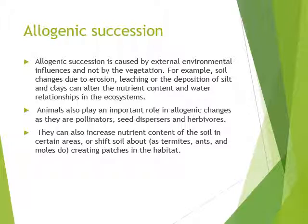The second cause is allogenic succession, which is caused by external environmental influences and not by the vegetation. For example, soil changes due to erosion, leaching, or deposition of silt and clay can alter the nutritional content and water relationships in the ecosystem. Animals also play an important role in allogenic changes as pollinators, seed dispersers, and herbivores. They can increase nutrient content of the soil in certain areas or shift soil, creating patches in the habitat that may favor certain species.